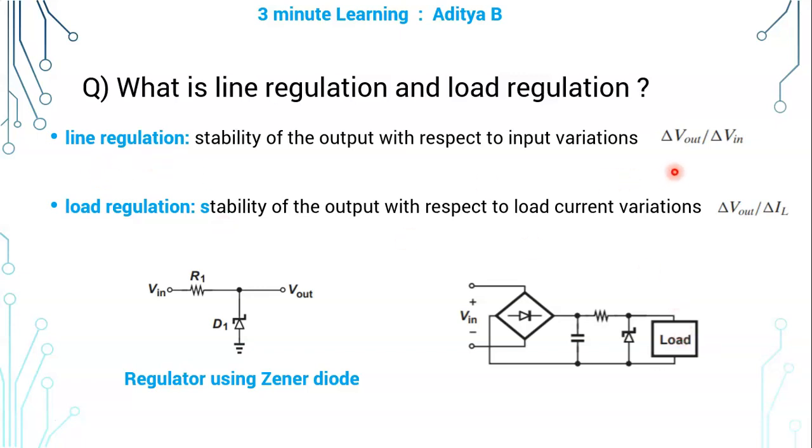Line regulation is given by the formula ΔVout/ΔVin. That is, change in output voltage should be very small with respect to change in input voltage. Load regulation is ΔVout/ΔIL - that is, change in output voltage should be very small with respect to the change in the load current.